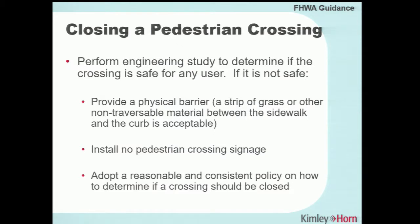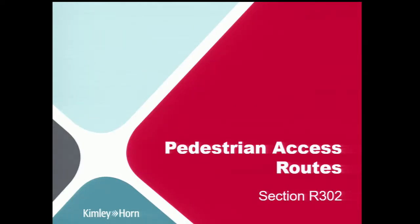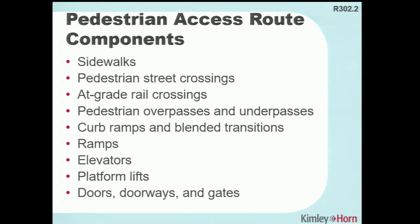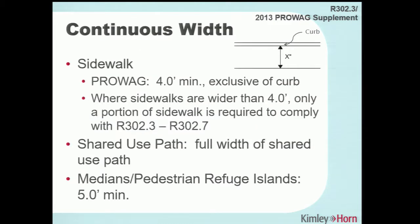Now getting into the technical standards. Pedestrian access routes include anything along the pedestrian path of travel: sidewalks, pedestrian street crossings, at-grade rail crossings, and curb ramps. For sidewalk width, ProAG requires a four-foot minimum exclusive of curb width — one of the differences from the 2010 standards, which had a three-foot minimum. If you have a shared-use path, it is considered the full width of that path.